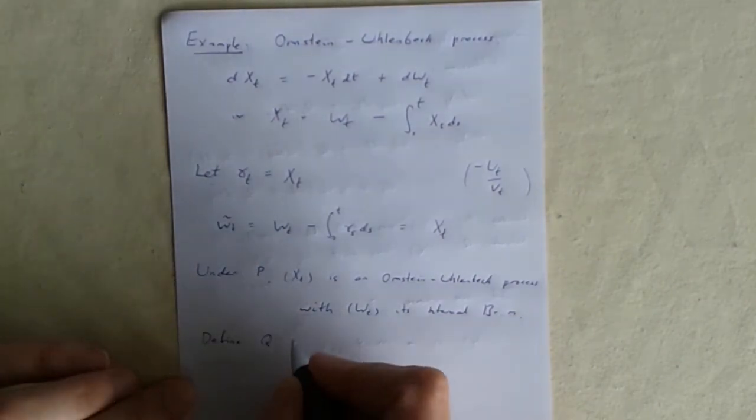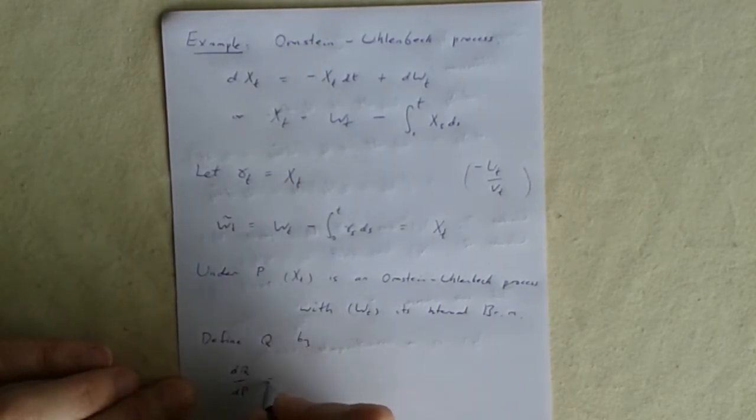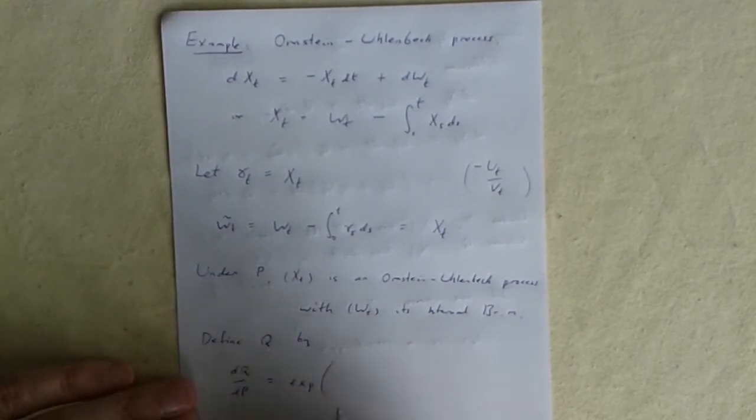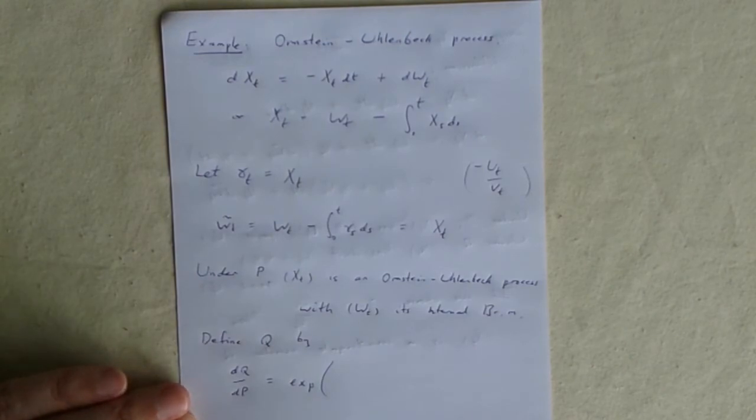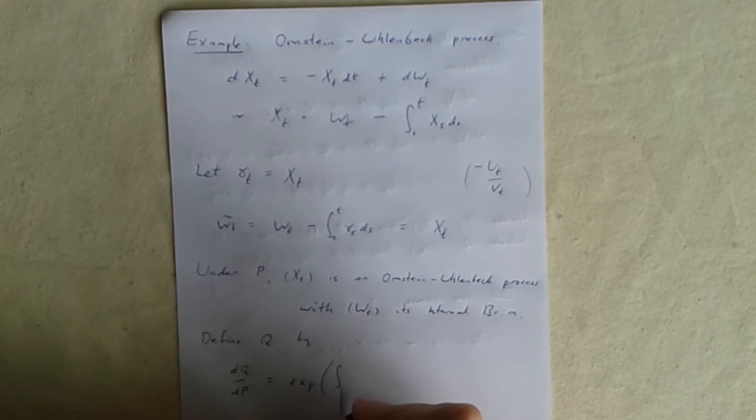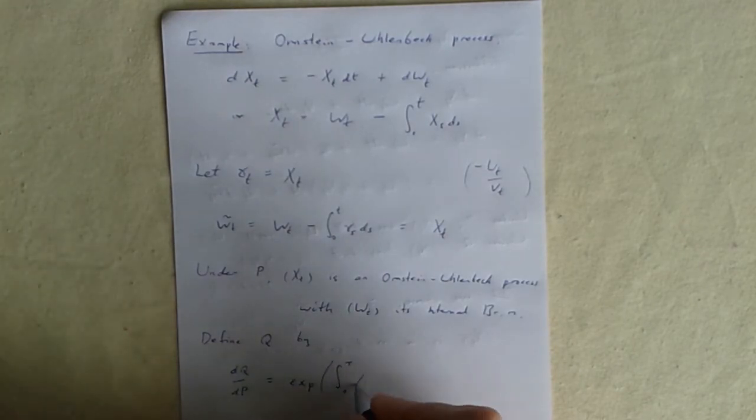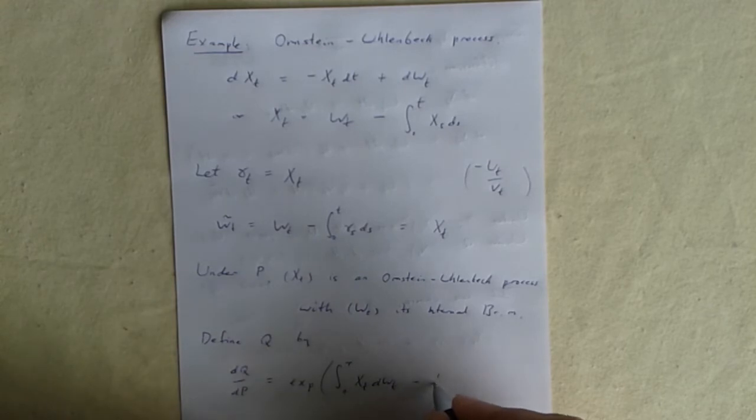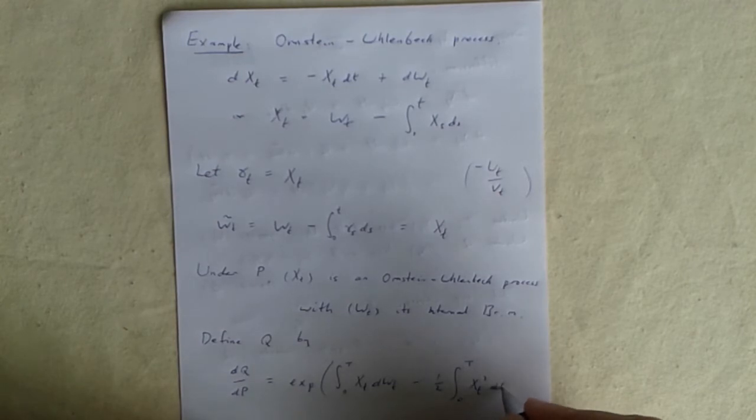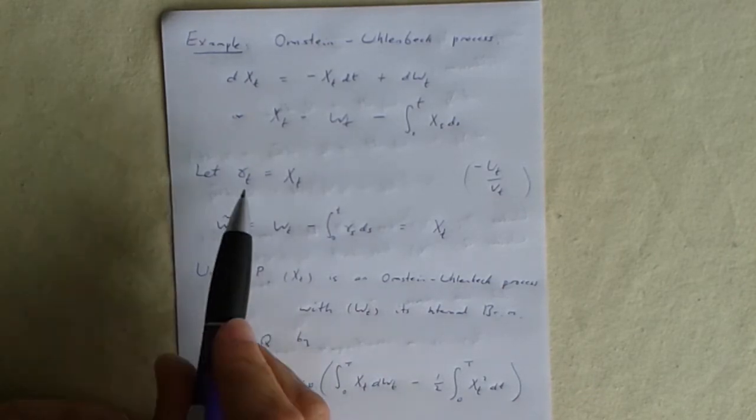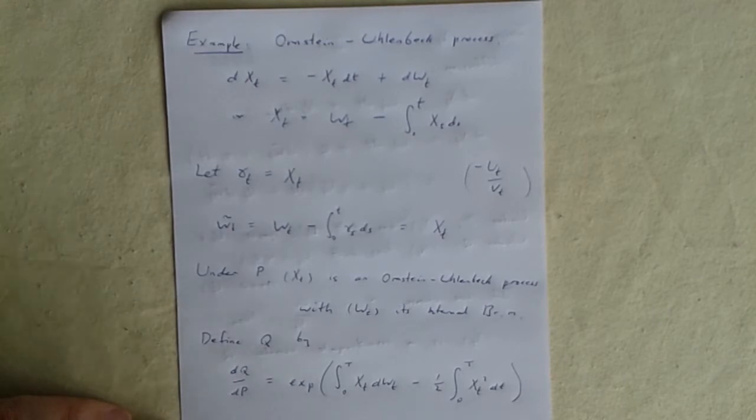Now we define our new probability measure Q and all we have to do for that is write down the Radon-Nikodym derivative. This is the Cameron-Martin-Girsanov change of measure. The first integral is the stochastic integral and the second one the ordinary integral. I've put in Xt in both these places. In the general case we would be putting the gamma t. So that's our change of measure.